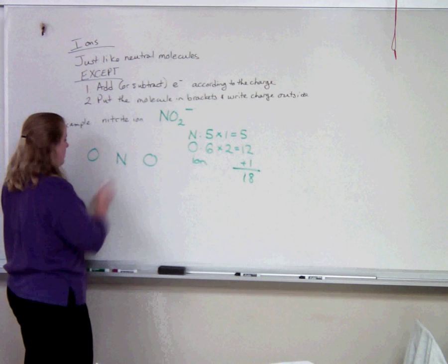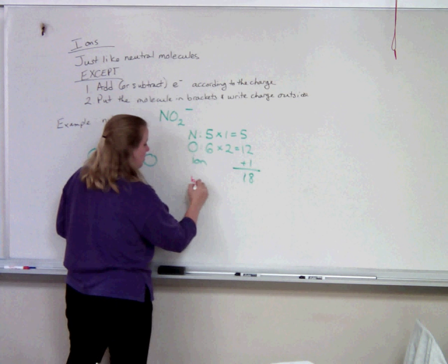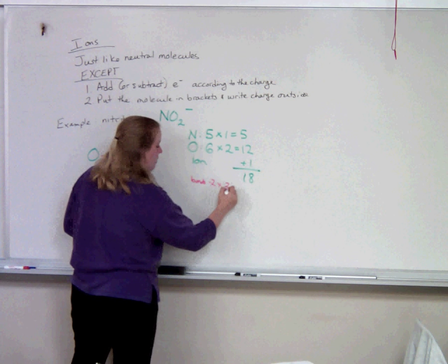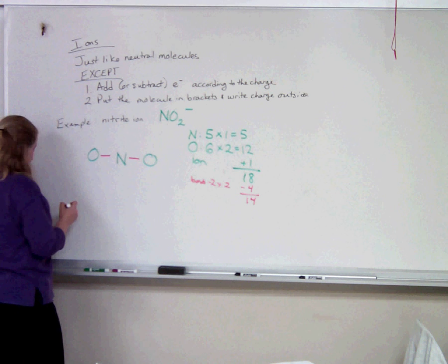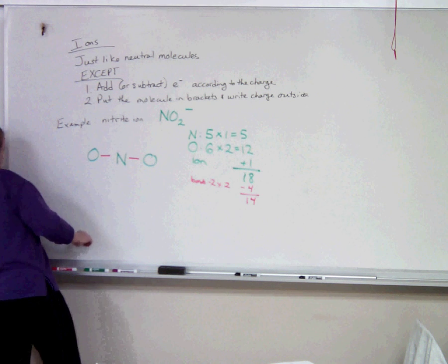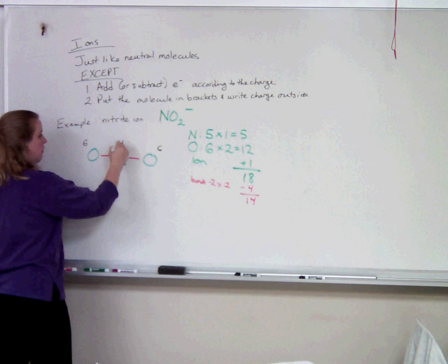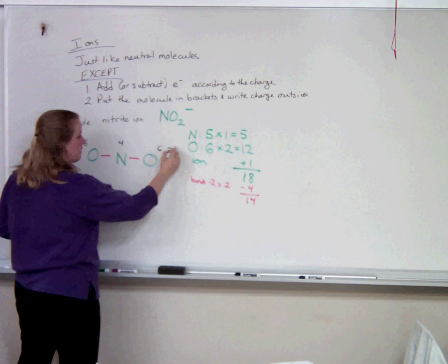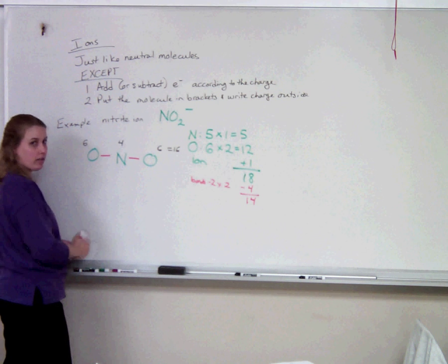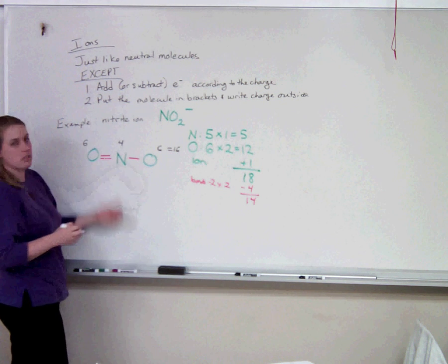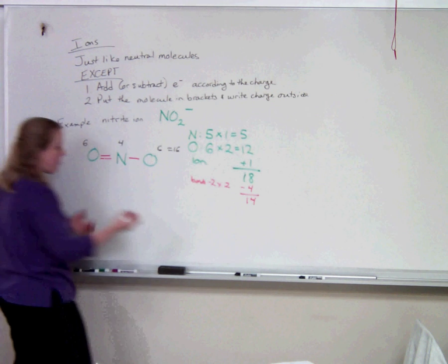Then we make our bonds, and we're going to subtract 2 for each bond. We made 2 bonds. Now we're going to count for need. Each of the oxygens needs 6, and nitrogen needs 4 — that's 16. But we only have 14, so we're going to have to make another bond. You can have double bonds in ions, just like you can have double bonds anywhere else. Both oxygen and nitrogen are eligible, so we can make a double bond anywhere. It doesn't matter if you do it here or here, so I just picked one. Subtract another 2.